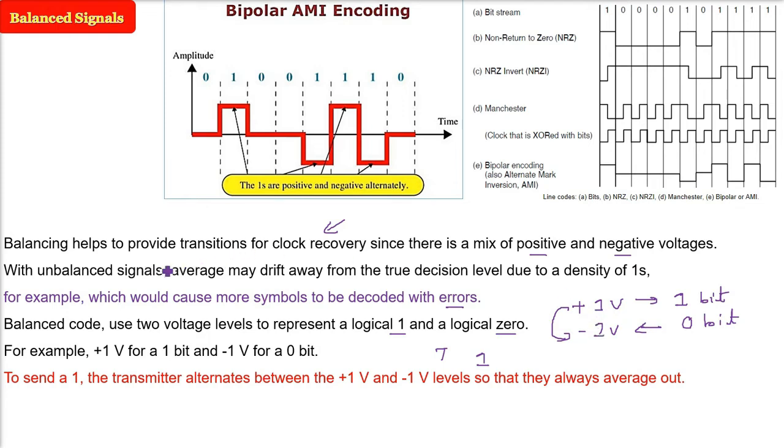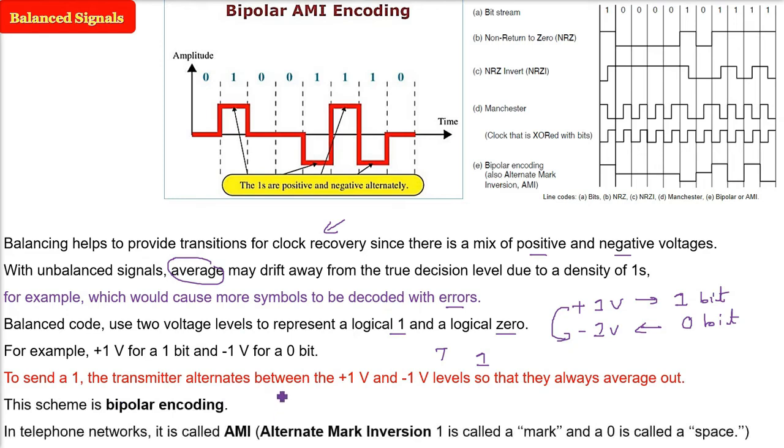So this is alternating - the transmitter will alternate between plus 1 and minus 1. This scheme is called bipolar encoding.